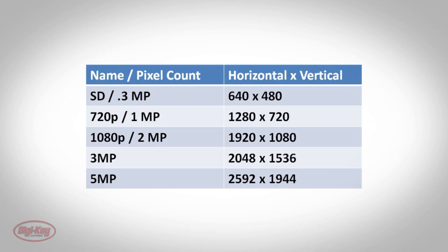Another common term is pixel count. Pixel count is the product of the number of rows and the number of columns. As an example, a 1080 display has a resolution of 1920 by 1080 pixels, so it provides an image with 2.07 million pixels, or simply 2 megapixels.